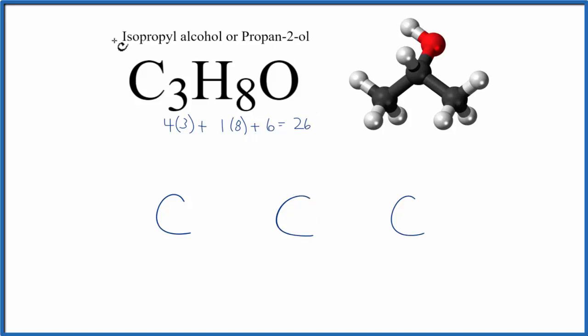We can look at the name here, ISO, that tells us that it's going to be on the central carbon, but this two here also tells us it's on the one, two, it's on the second carbon. So we know that our oxygen will be here on this carbon.